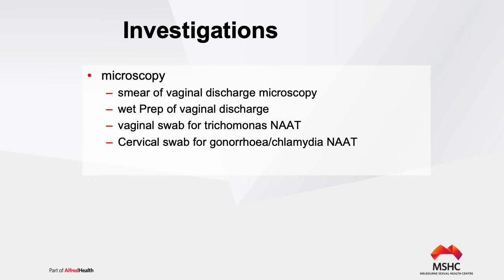You take a smear of the discharge and send it for gram stain. You do a wet prep of the vaginal discharge. You send the vaginal discharge for gonorrhea and chlamydia nucleic acid amplification testing, and if gonorrhea is suspected, ensure a gonococcal culture test for antimicrobial susceptibility testing. A vaginal swab for Trichomonas vaginalis is also important when someone presents with an abnormal discharge.